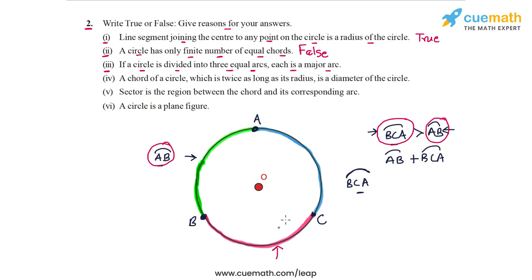Similarly, BC has to be a minor arc and CA also has to be a minor arc. So in part three, all the three equal arcs will be minor arcs. So this statement is also false.